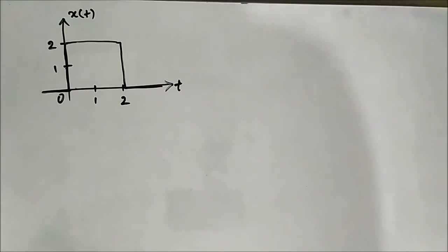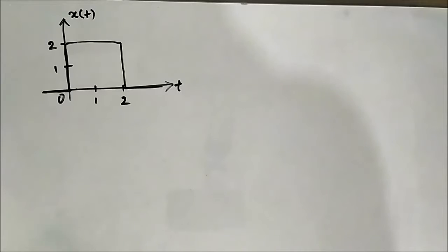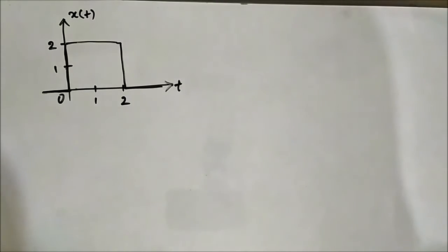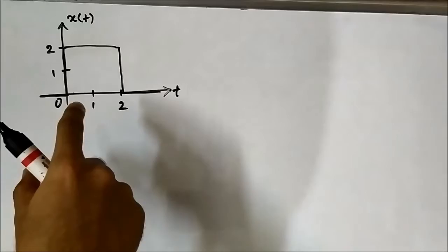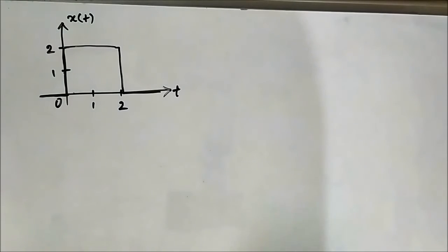Hello friends, welcome to Engineering Tutorial. In the previous video we discussed some basic concepts about time shifting in the continuous time domain signal — how shifting happens in both directions and the whole mechanism. In this video we are going to discuss the same shifting operation but for discrete time domain signals. We will take the same signal considered in the first video.